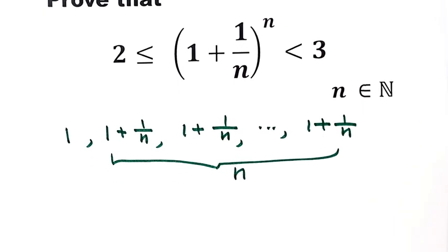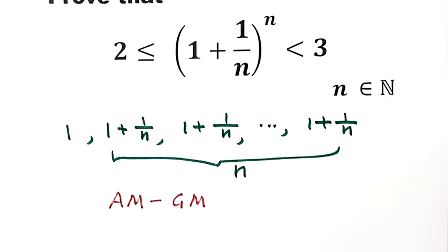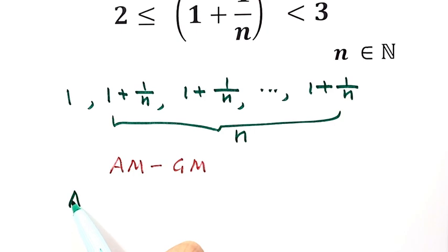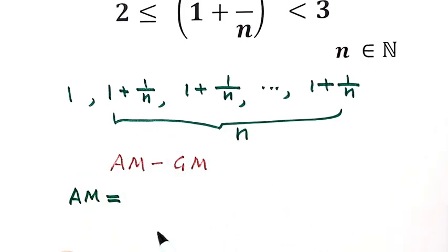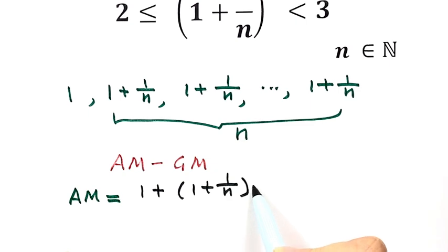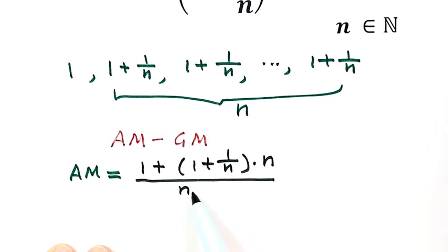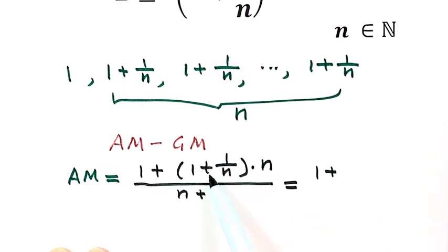Next, we're going to use the AM-GM inequality, meaning the arithmetic mean is greater than or equal to the geometric mean. The arithmetic mean for our case is all these n+1 terms added together, divided by n+1. That gives us 1 plus n times (1 + 1/n), divided by n+1. Simplifying the top gives 1 + n.